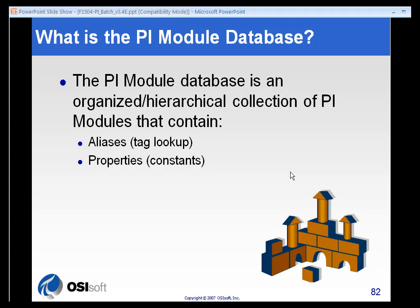What is the Module Database? The Module Database is simply a hierarchical collection of modules. The modules can represent products, equipment, production lines, machinery — literally anything. The modules contain two important aspects: aliasing, or tag lookups, giving common names to maybe uncommonly named tags, and properties. Properties are constants — things that don't change regularly, as opposed to tag values that do change regularly.